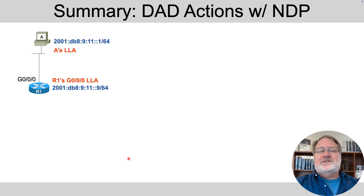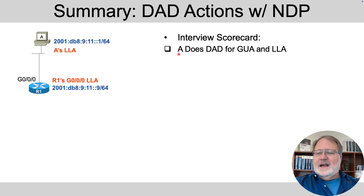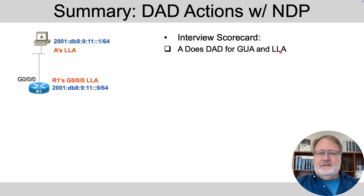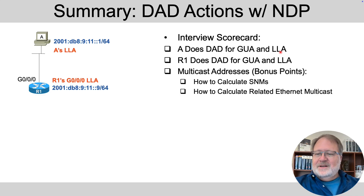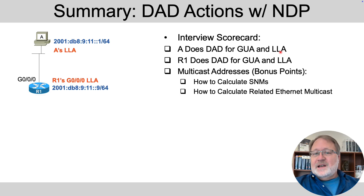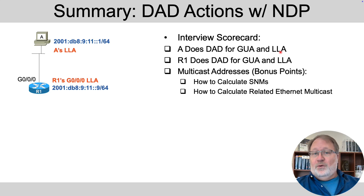To summarize DAD actions that happen right up front on that top subnet for my interview scorecard: knowing that A does DAD for all its unicast addresses — that includes GUAs and link local addresses — and R1 does the same. Then how much do you know about the solicited node multicast and Ethernet multicast addresses used to perform DAD?